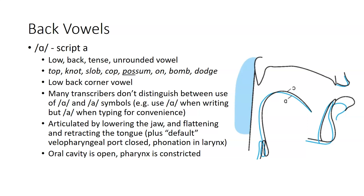So the script A may be used when writing by hand because that's easy to do, but when typing on a computer, what you usually get is the non-script version of A, and that is sometimes just used for convenience. The A is articulated by lowering the jaw and flattening and retracting the tongue, plus the usual closure of the velopharyngeal port and phonation.